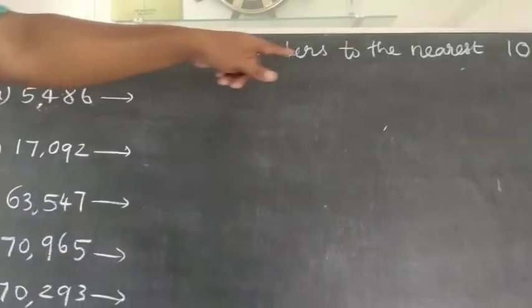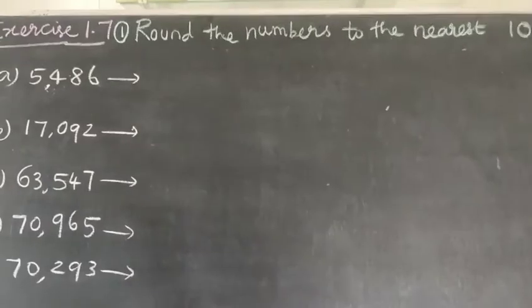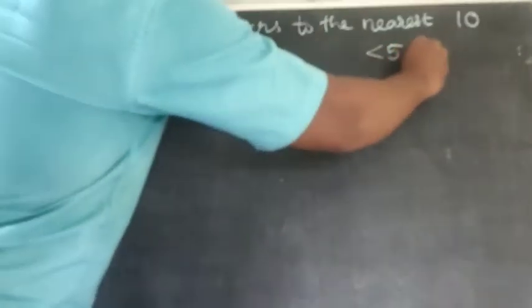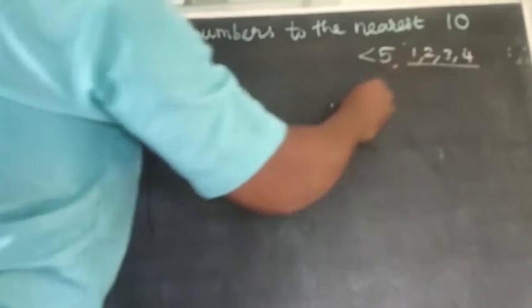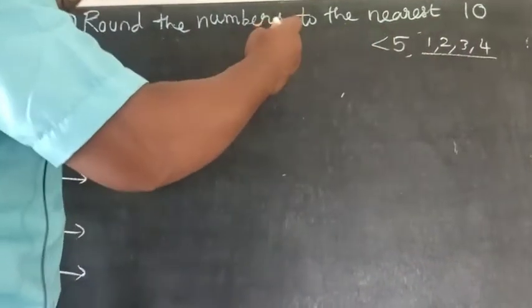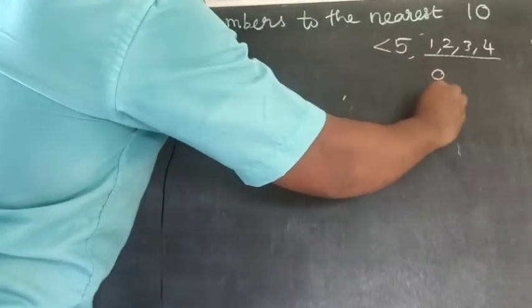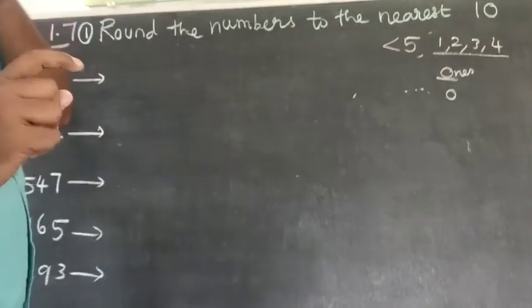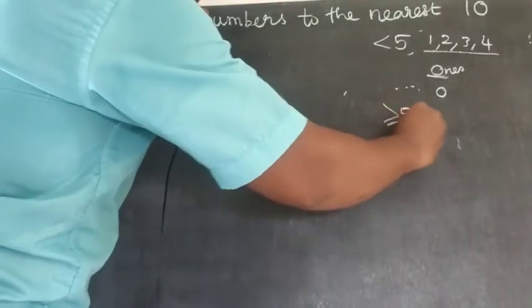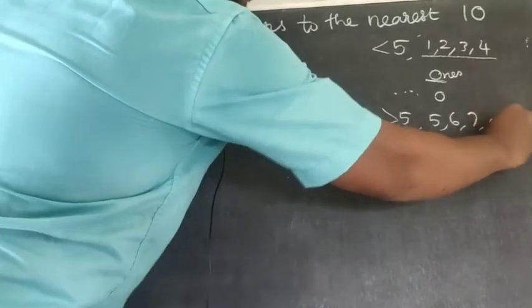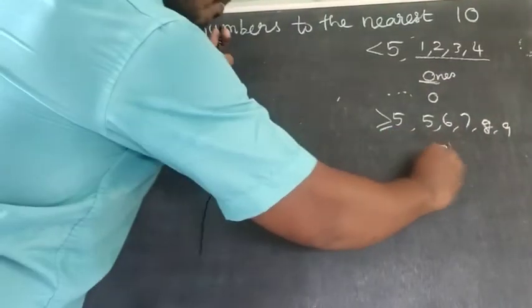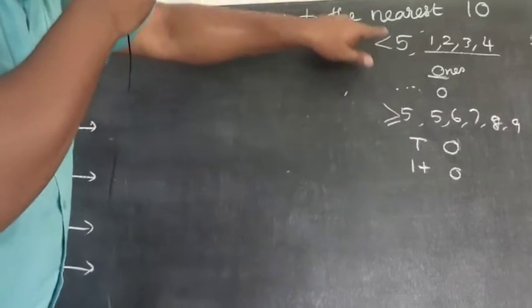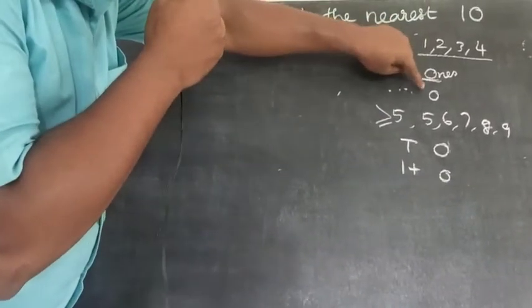For rounding to the nearest ten: if the last digit (ones digit) is less than five—that is one, two, three, or four—the ones digit becomes zero with no change to other places. If greater than or equal to five—that is five, six, seven, eight, nine—the ones digit becomes zero and you add one to the tens place.